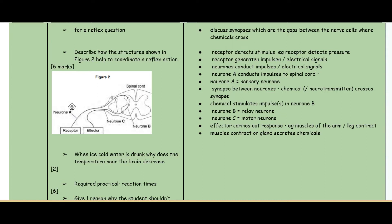Neuron A is specifically the sensory neuron. Then you've got the synapses between the neurons which is where the chemicals are being transmitted. It then goes to neuron B and then to neuron C. Neuron B is a relay neuron, neuron C is the motor neuron, and then the effector carries out that response.